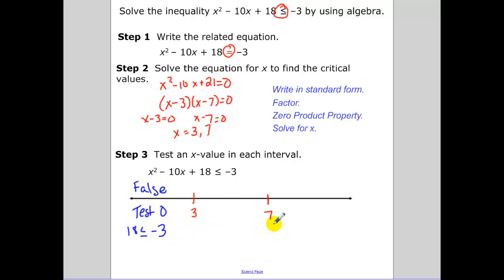Now between 3 and 7, I'm going to test the point, test the number in between there. And that's going to be negative 6 less than or equal to negative 3. That's true. So any number between 3 and 7 makes this inequality true, which is what we were looking for.